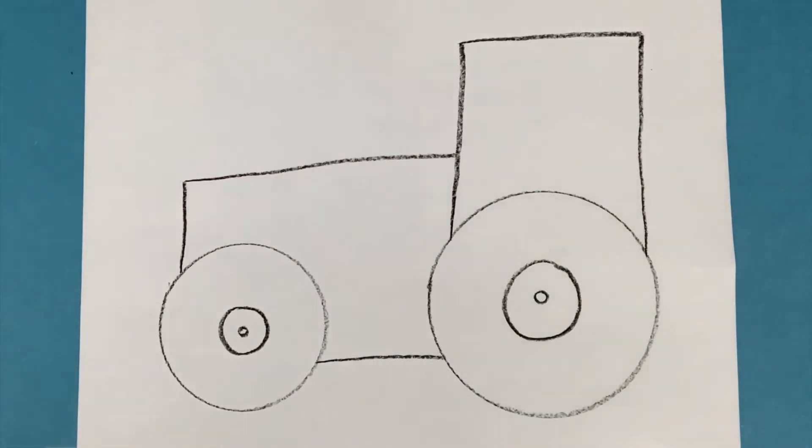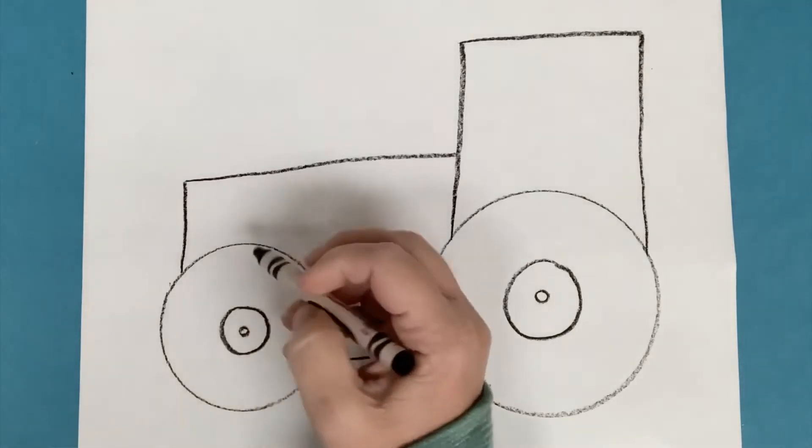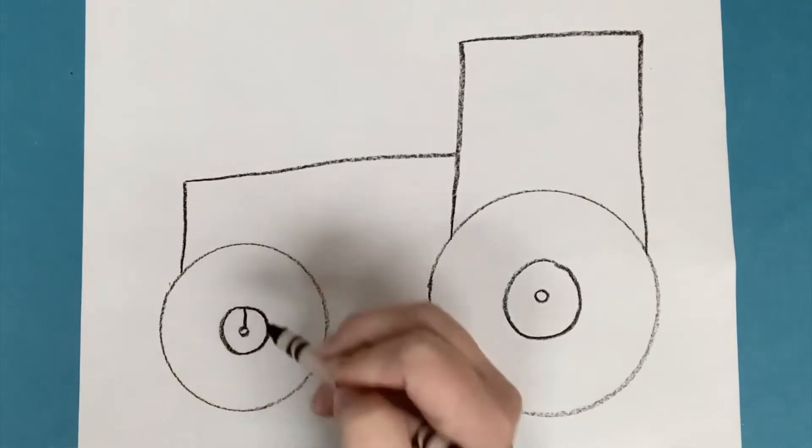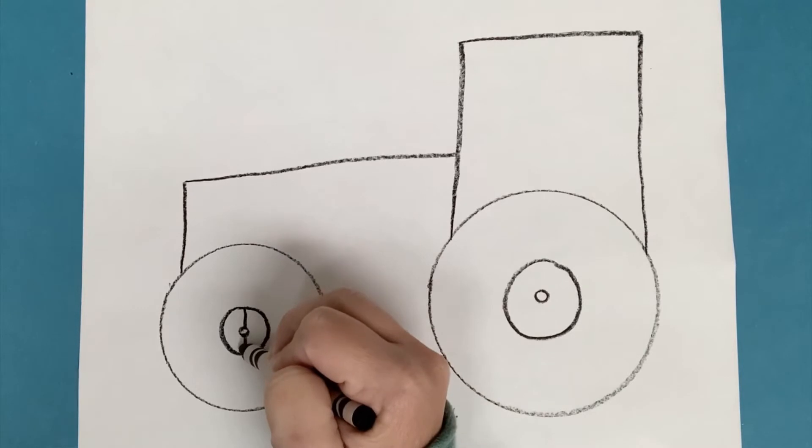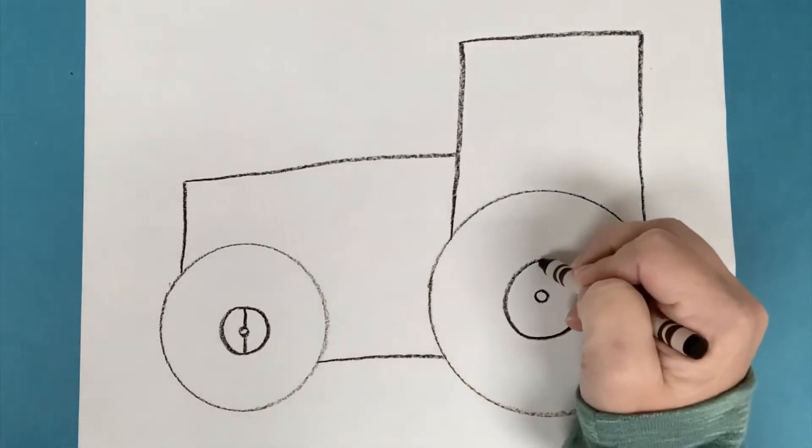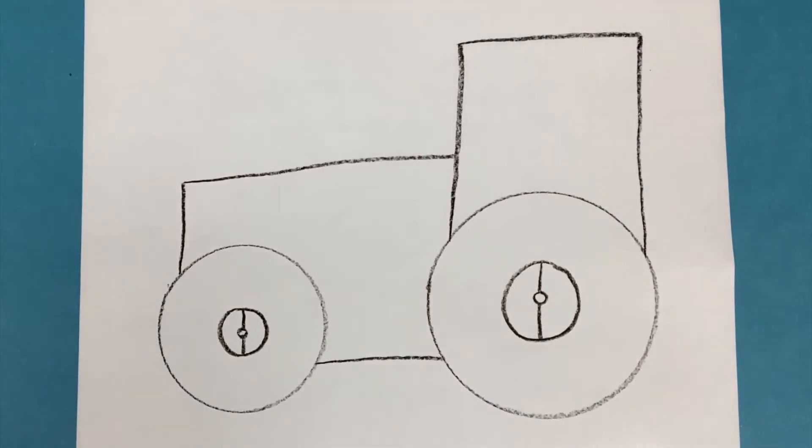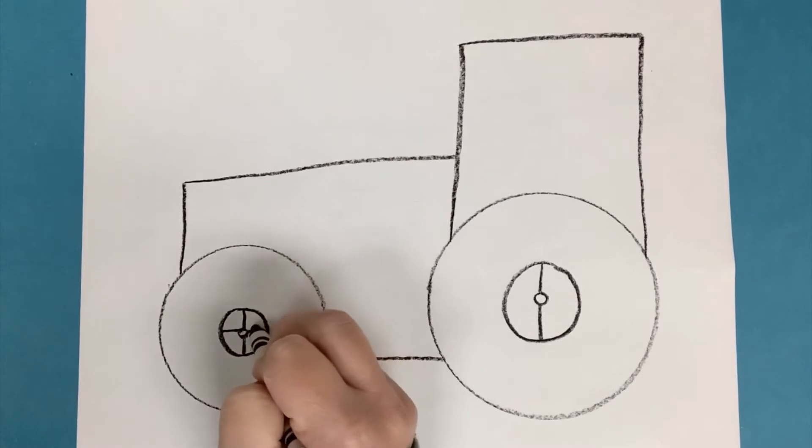Let's put some spokes on our wheel next. So I'm going to add a vertical line from the top to the bottom. Let's do the same in the other wheel. All right, now I'm going to try a horizontal line going across.